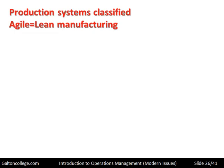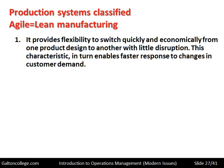Let's look at the idea of agile manufacturing, which is equivalent to lean manufacturing. It provides the flexibility to switch economically from one product design to another with little disruption, leading to faster responses to changes in customer demand. Because a company can switch from one type of product design to another very quickly, it is very agile — it can shift production very quickly from making product X to making product Y, and that means it is able to keep up with changing customer demand as customers look for new designs.